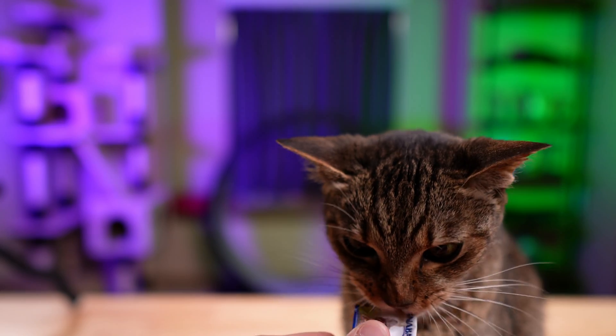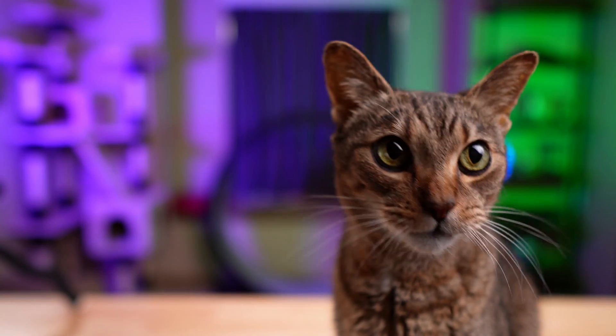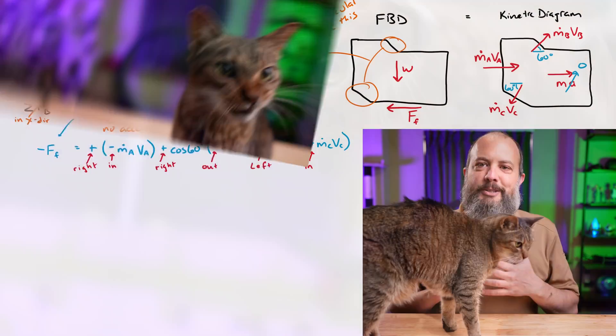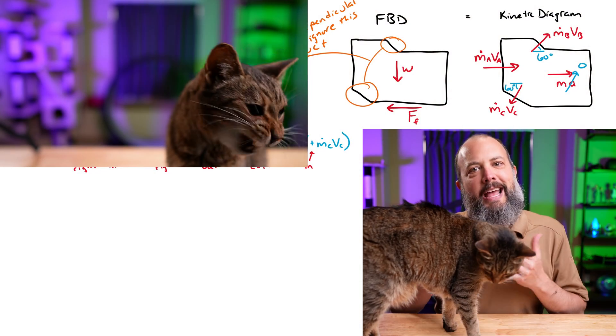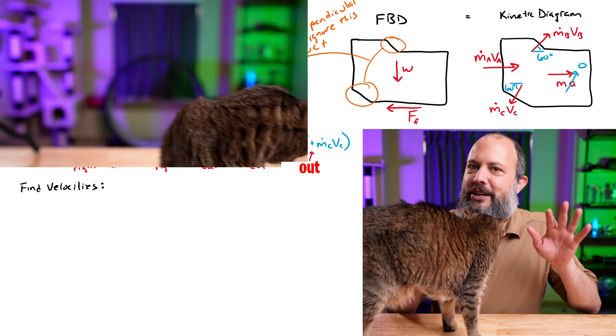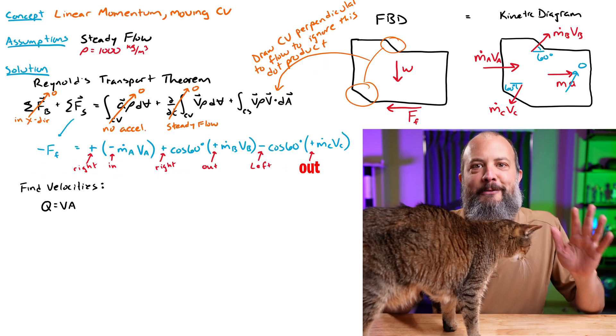But good news is that the engineering part of this problem is basically completely done. At this point, we're just kind of solving for velocities and masses. We're just plugging in numbers. So back to the problem, we need velocities at A, B, and C. And I already messed up once at the very beginning of this problem, not accounting for the moving control volume. So I'm going to remember to account for it this time.